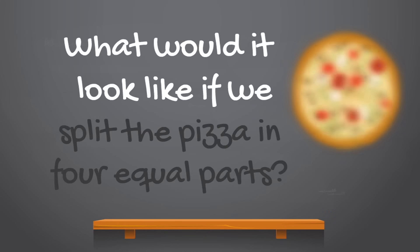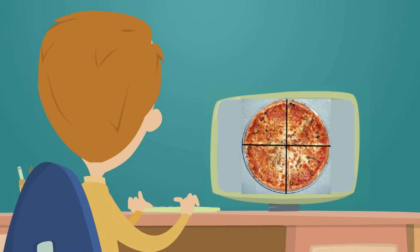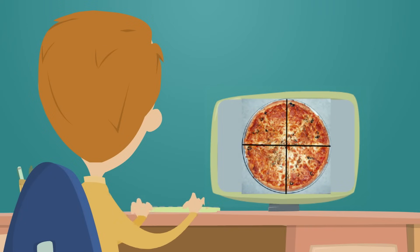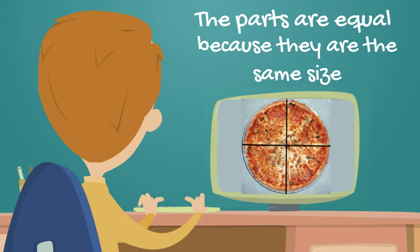So what would that look like? What would it look like if we had this pizza cut into four equal parts? How would we know that these parts of the pizza were equal? A pizza with four equal parts might look like this. We know the parts are equal because each of the parts are the same size.